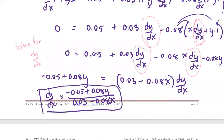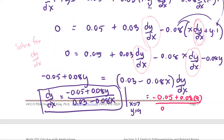Now we get the general formula for dy/dx. Next, we evaluate when X equals 7 and Y equals 9, using different colors to see the difference. So we get negative 0.05 plus 0.08 times 9, divided by 0.03 minus 0.08 times 7. Putting this in the calculator gives us approximately negative 1.26, keeping two decimal places. This is our dy/dx.